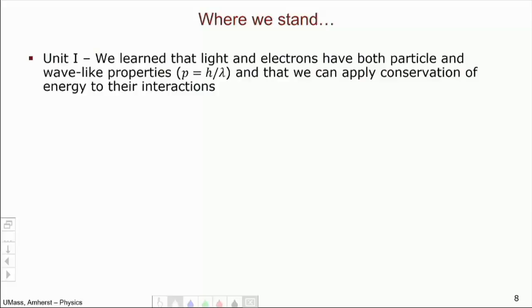So unit one, way back at the beginning, what did we learn? We learned that both light and electrons have both particle and wave properties. They're neither particles nor waves. They're both at the same time and neither, all at once. And we can connect the particle and wave properties through this expression, P equals H over lambda, the de Broglie relation.